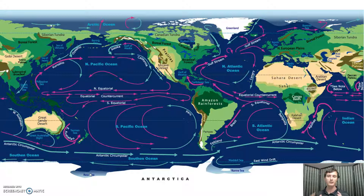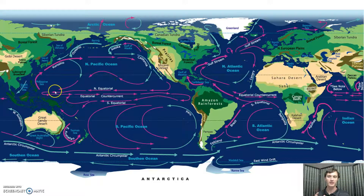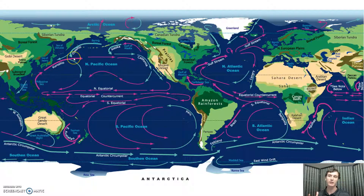This is our global ocean current map. We have our warmer waters in pink and our cooler waters in blue. The equator is going to be a place that receives a lot of direct sunlight, so the water there tends to warm up. It warms up, it might come over here and hit something that blocks its path — like the continents — and forces it to move northward.